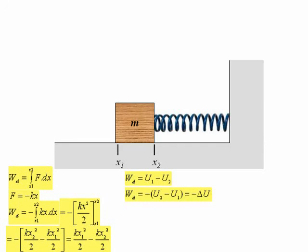In the case shown where the block is slowed down by the spring, the work done is negative. So the potential energy gained by the system, actually it's all stored in the spring, is positive.